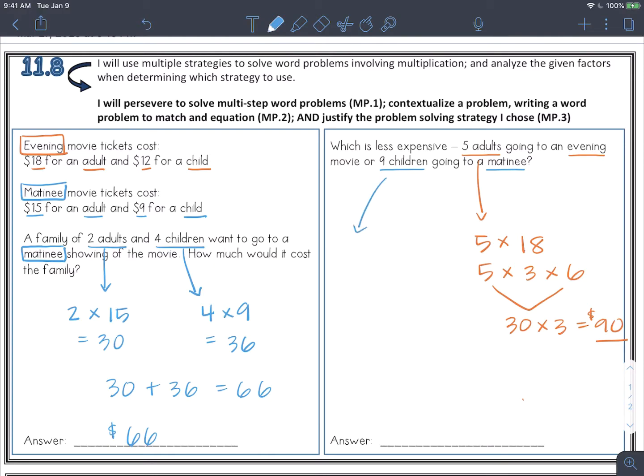And then I get $90 for the five adults going to an evening movie. Now let's go back and calculate the nine children going to a matinee. That would be nine times nine because the tickets are $9 each and that's $81. Now I can compare. So which is less expensive? 81 is less than 90. So it would be less expensive for the nine children going to the matinee than it would be for the five adults going to an evening movie.